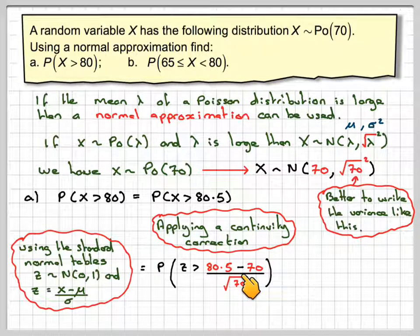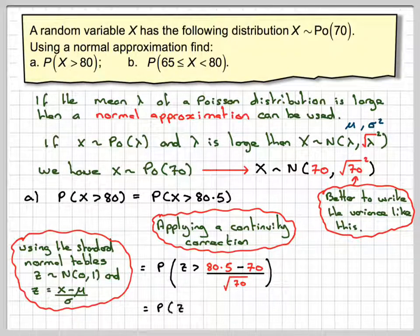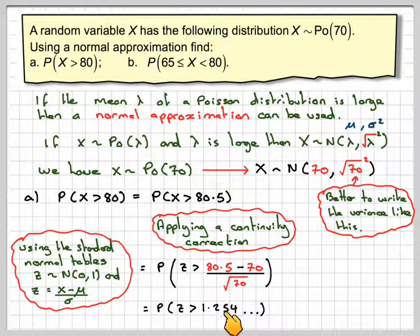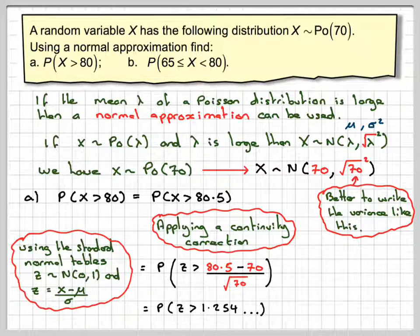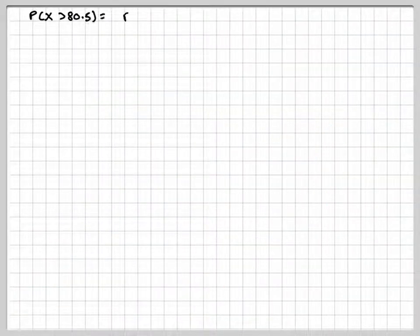We get the probability that Z is greater than 80.5 minus 70 divided by the square root of 70. This is why we write the square root of 70 here. That gives me the probability that Z must be greater than 1.254.